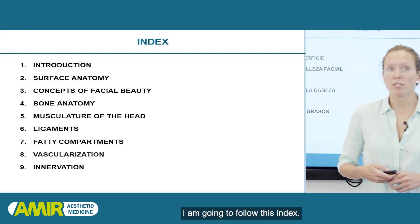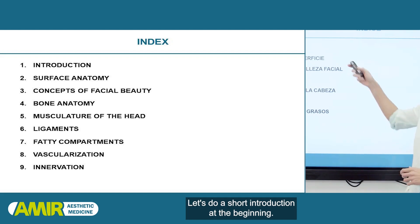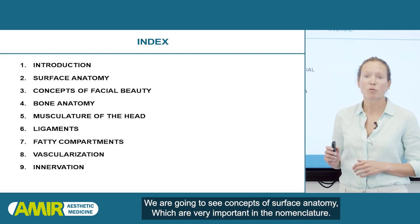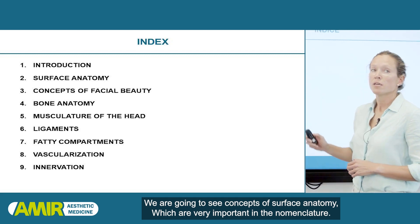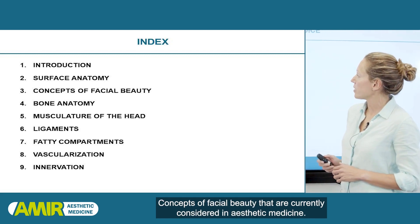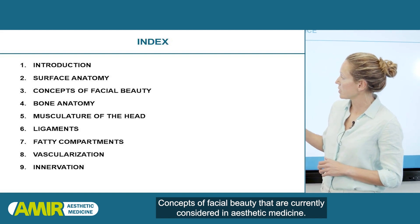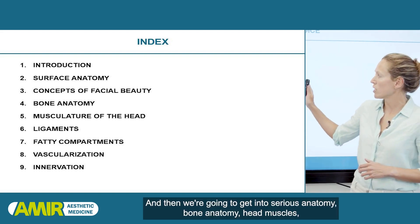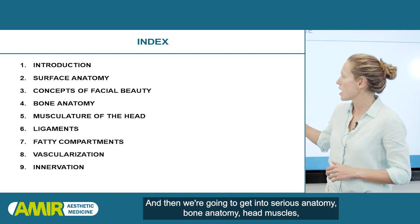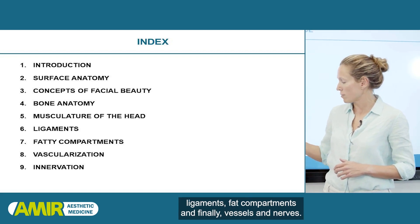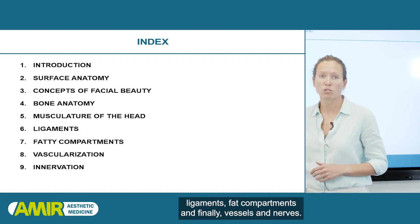I'm going to follow this index. Let's do a short introduction at the beginning. We are going to see concepts of surface anatomy, which are very important in the nomenclature, and concepts of facial beauty that are currently considered in aesthetic medicine. Then we're going to get into serious anatomy: bone anatomy, head muscles, ligaments, fat compartments, and finally vessels and nerves.